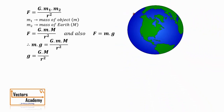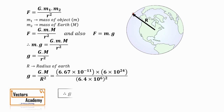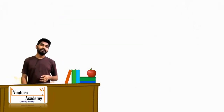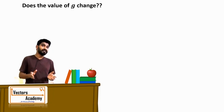Here, r is the distance between the objects — in this case, r is the radius of the earth. We know the value of the gravitational constant, the mass of the earth, and the radius of the earth. These are all constants, so we can substitute these values and get the value of g. But does g remain the same at all places on the earth, or does it vary?